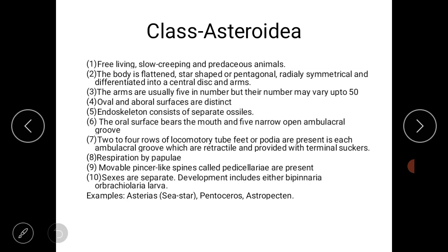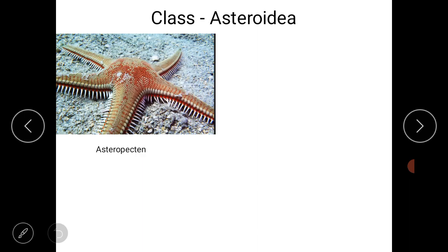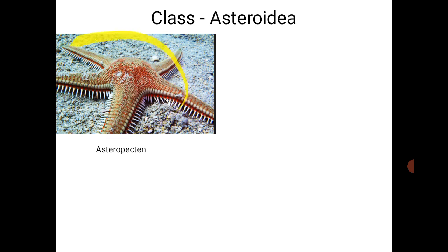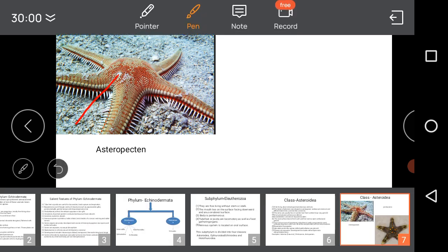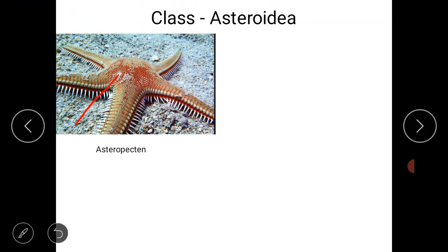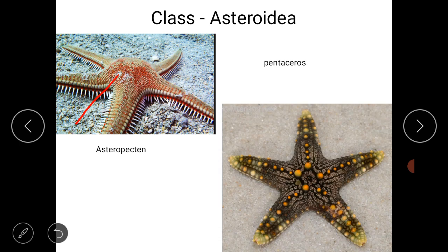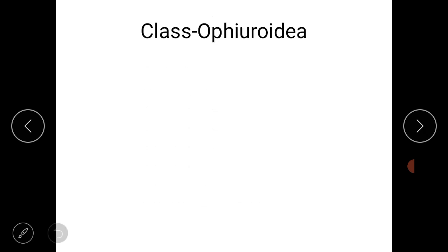Development includes either the bipinnaria larva or the brachiolaria larva. Examples of class Asteroidea include Asteropecten, Pentaceros, and sea stars. Observing Asteropecten, we can see all the characters we studied. This is the aboral surface, and the white-colored structure is the madreporite. There are five arms visible. The second example, Pentaceros, is also shown.